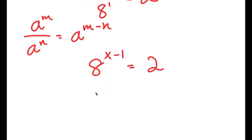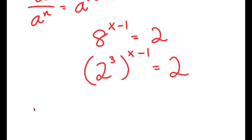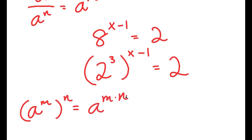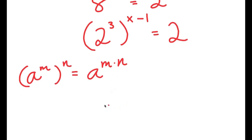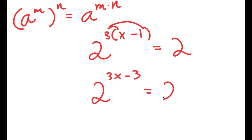Since 8 is the same thing as 2 to the power of 3, I get 2 to the power of 3 to the power of x minus 1 equals 2. Using the rule a^m to the power of n equals a^(m times n), this becomes 2 to the power of 3 times x minus 1. Distributing the 3 gives 2 to the power of 3x minus 3 equals 2.